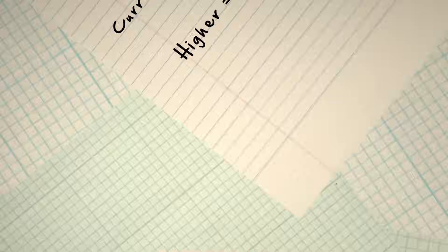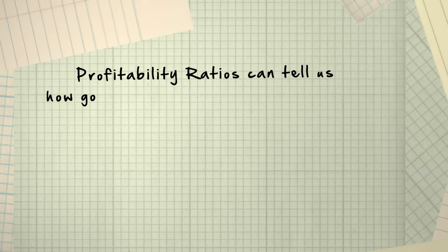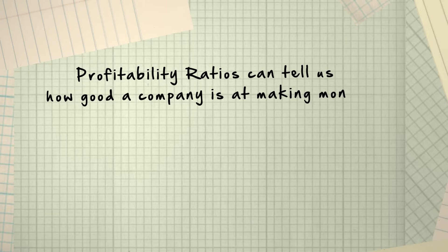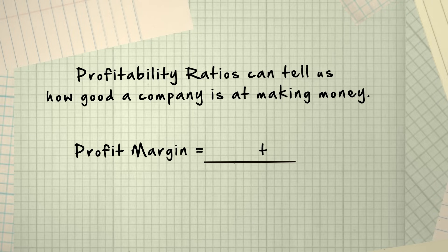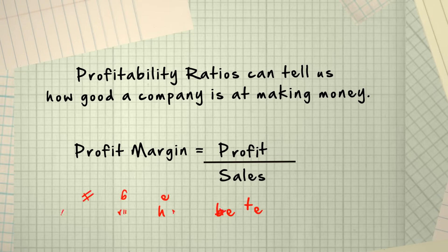Profitability ratios can tell us how good a company is at making money. An example of this is the profit margin ratio. This tells us how much profit your company earns compared to your company's sales. Normally, a higher number is better because you want to earn more profit for every one dollar of sales that you get.